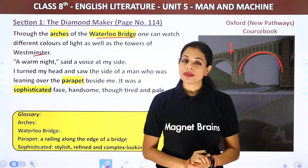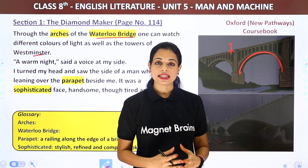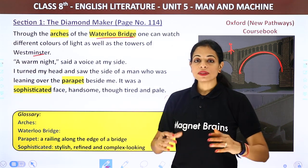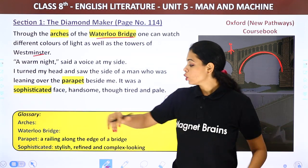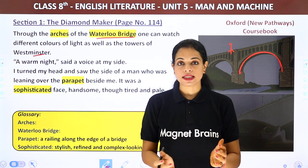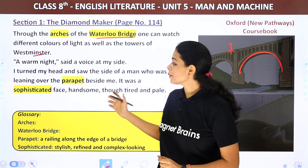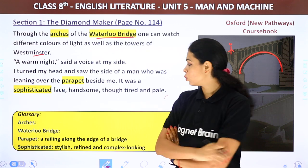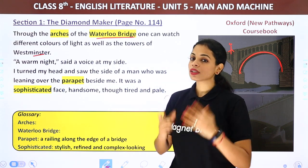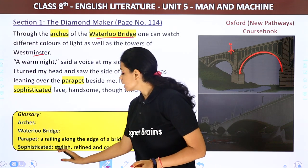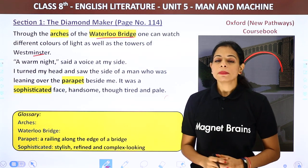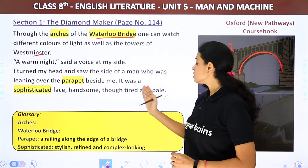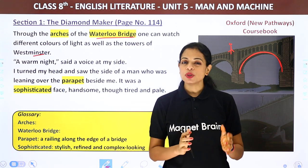It was a sophisticated face — stylish, refined and complex looking. He looked mature and sophisticated, and was handsome, though tired and pale. The narrator looked at him curiously and wondered: would he have anything to tell me? He looked intelligent. 'Very warm,' said the narrator. 'But not too warm for us here.' The stranger, still looking across the water, said, 'It is pleasant enough here just now.'